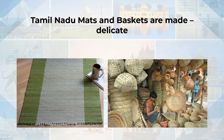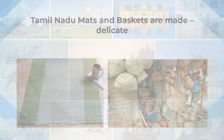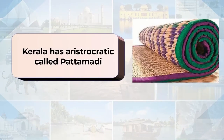The Sikki grass which is popular in Bihar is used to make mats with motifs. Men work with cane and bamboo in the northeastern states, usually making cutlery, bamboo mats, fans and other items. Tamil Nadu is very popular for mats and baskets which are very delicate and intricate. Kerala has a unique aristocratic item called Pata Madhi made by craftsmen.